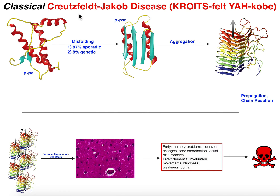In classical Creutzfeldt-Jakob disease, the prion protein is the culprit. Because it was the initial prion disease discovered, the gene encoding this protein is named prion protein. The correctly folded form has a high degree of alpha helices relative to beta strands. Through misfolding, we get a different conformer of the prion protein — the same protein, just a different conformation. This misfolded conformer has a higher degree of beta strands, and it's these beta strands that allow prion proteins to aggregate.